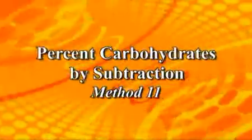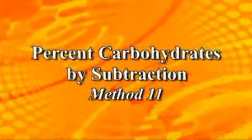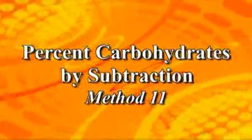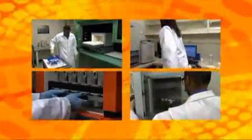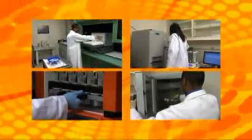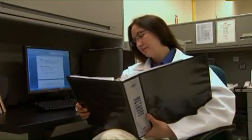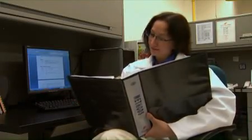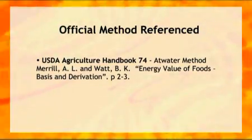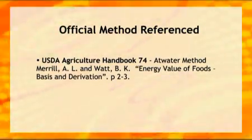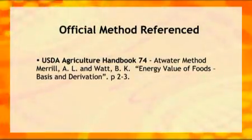This is the video presentation of Percent Carbohydrates by Subtraction, Analytical Services Method number 11. Percent Carbohydrates by Subtraction is a proximate analysis based on the calculation of the difference between 100 and the sum of percent moisture, percent ash, percent protein, and percent fat. Although this method is only a calculation, reading the test method is highly recommended. The Percent Carbohydrates by Subtraction method described here is based on this official method.